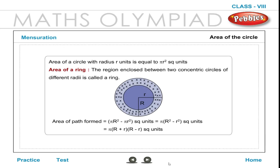Area of a circle: Area of a circle with radius R units is equal to πR² square units. Area of a ring: The region enclosed between two concentric circles of different radii is called a ring. Area of ring = πR² − πr² = π(R² − r²) square units, where R is the outer radius and r is the inner radius.